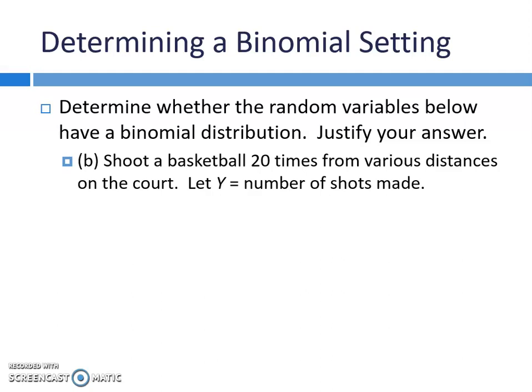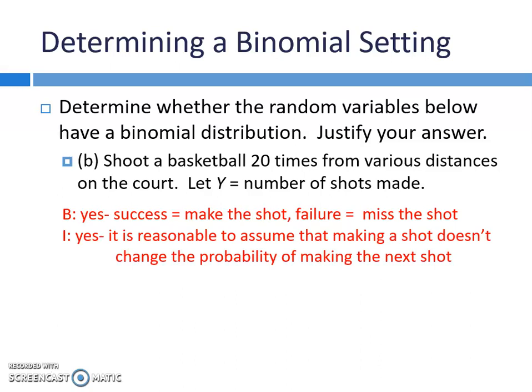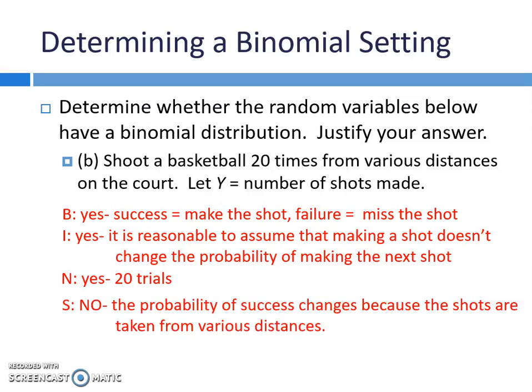Next example: you shoot a basketball 20 times from various distances on the court; let Y equal the number of shots made. B — binary? Yes, either you make the shot or you miss. I — independent? It is reasonable to assume that making one shot doesn't change the probability of making the next shot. N — set number of trials? Yes, 20 baskets. S — does the success probability stay the same? No, because we're shooting from various distances — you're more likely to make the shot closer to the basket than at half court. The probability of success changes because shots are taken from various distances. Therefore, this is not a binomial setting.